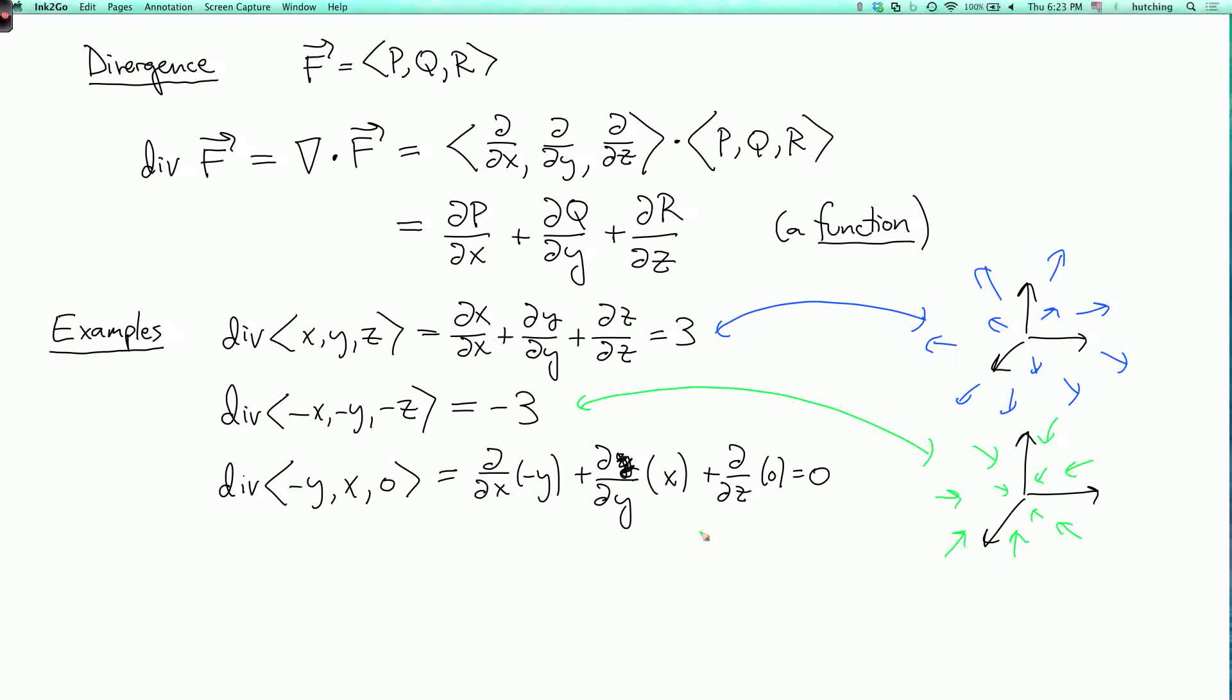And the third vector field, we've seen this one before. So this rotates in the xy plane. So it's a little hard to indicate that in the picture, but it's horizontal in the xy plane and rotates like this. And in other horizontal planes, it rotates the same way.